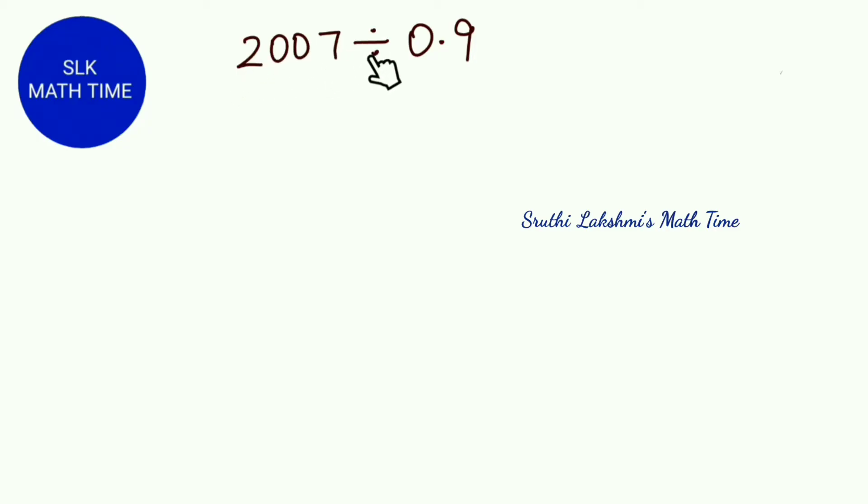2007 divided by 0.9. So here the decimal number is 0.9 and 2007 is a whole number.